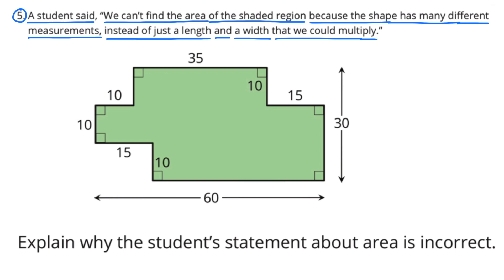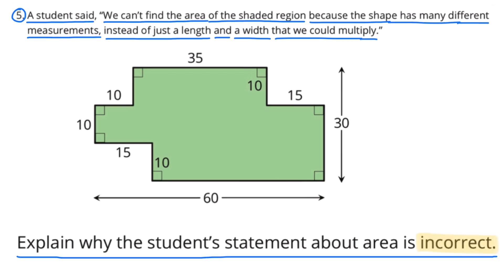Number 5. A student said, we can't find the area of the shaded region because the shape has many different measurements, instead of just a length and a width that we could multiply. Explain why the student's statement about the area is incorrect.